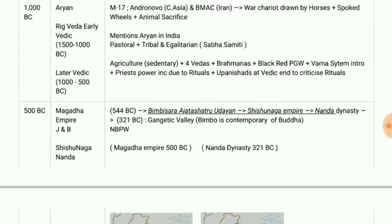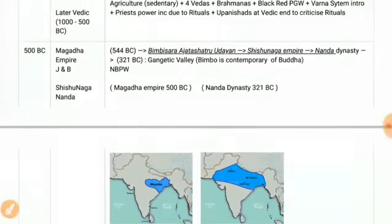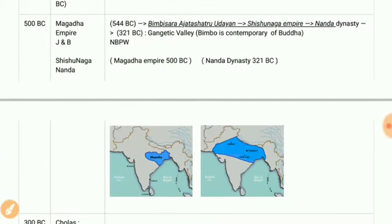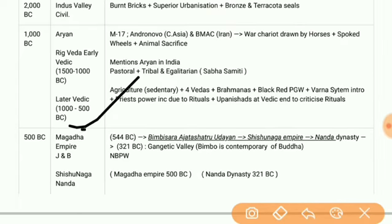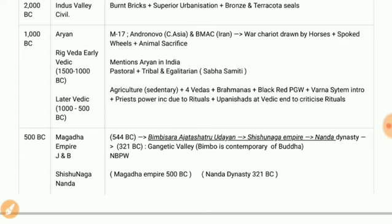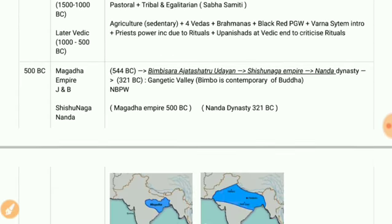Then we have the Mahajanapadas, established during the Later Vedic Period. Sixteen kingdoms with certain republics were established and they were known as Mahajanapadas.